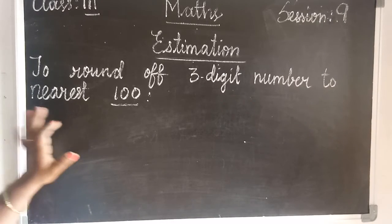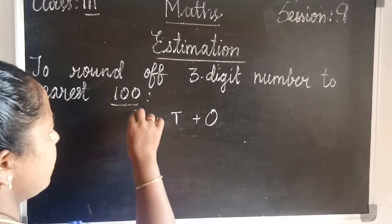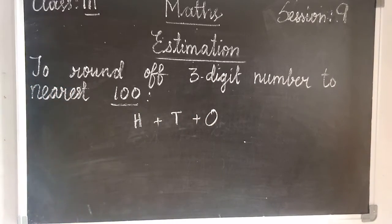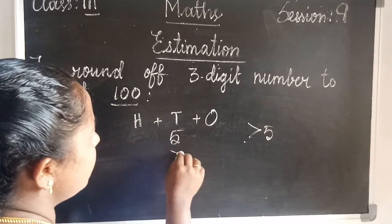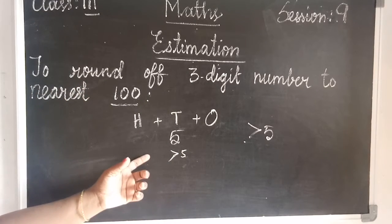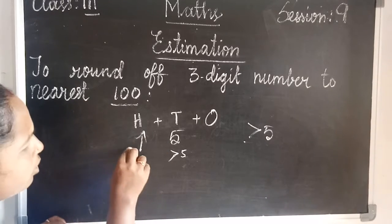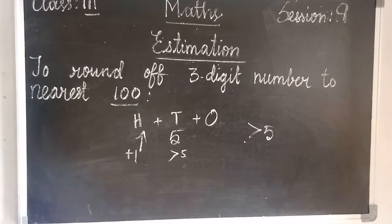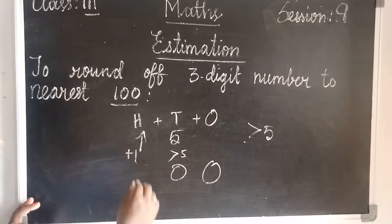Now we write the place values: ones, tens, hundreds. Look at the digit in the tens place value. If it is 5 or greater than 5, then increase the hundreds digit by 1, and then the tens and ones place values become 0.